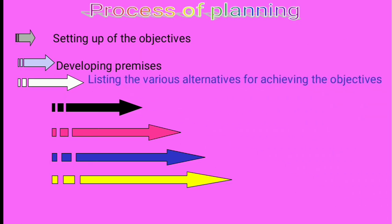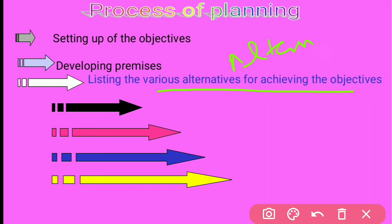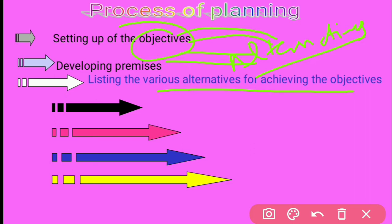The third step is listing the various alternatives for achieving the objective of the organization. In this step, the planning manager lists different alternatives — the various ways through which the objectives can be achieved. A list of all possible alternatives is prepared.